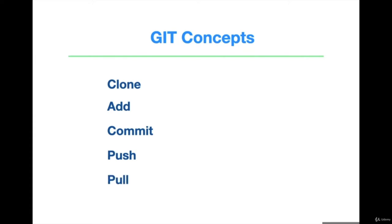Pull is the opposite activity of push — it downloads the changes from a remote repository to a machine. And the last one is merge, which is used to merge the changes from one branch to another.